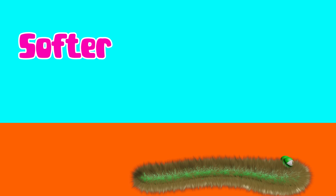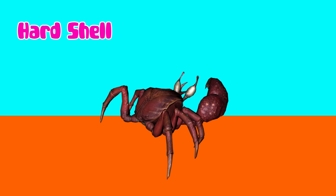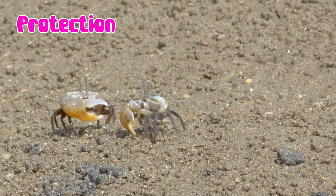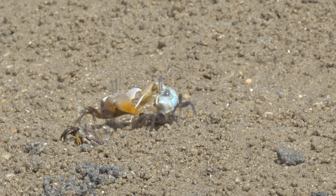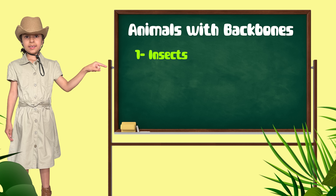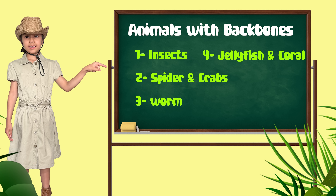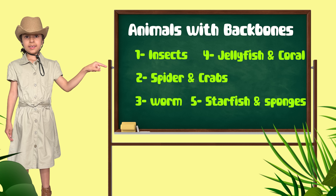The second group of animals are those without backbones, which is called invertebrates. They don't have a spine. Their bodies are softer or have a hard shell for protection. Animals without backbones are like insects, spiders and crabs, worms, jellyfish and corals, starfish and sponges.